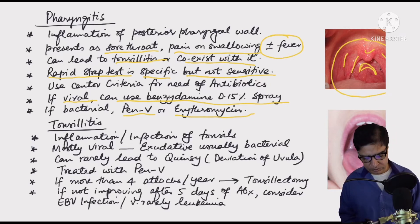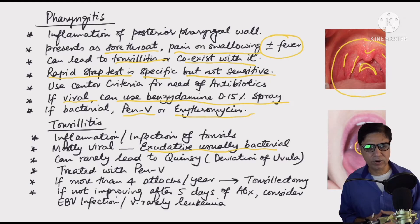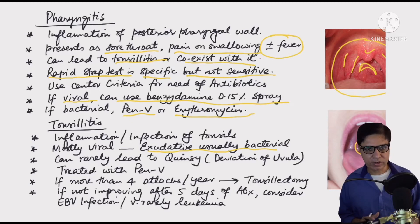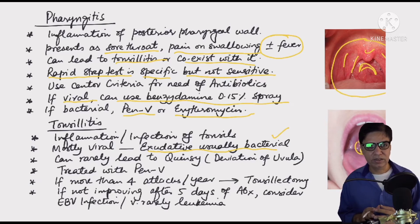If there are heavy exudates and pus on the tonsils — white islands of exudate on bilaterally enlarged, inflamed tonsils — this is bilateral tonsillitis, usually suggesting bacterial infection. Tonsillitis is mostly bilateral; if unilateral, think of a peritonsillar abscess — quinsy. In quinsy, one tonsil is larger than the other and the uvula is deviated to the opposite side. Antibiotics alone won't help — the abscess needs to be drained by ENT.